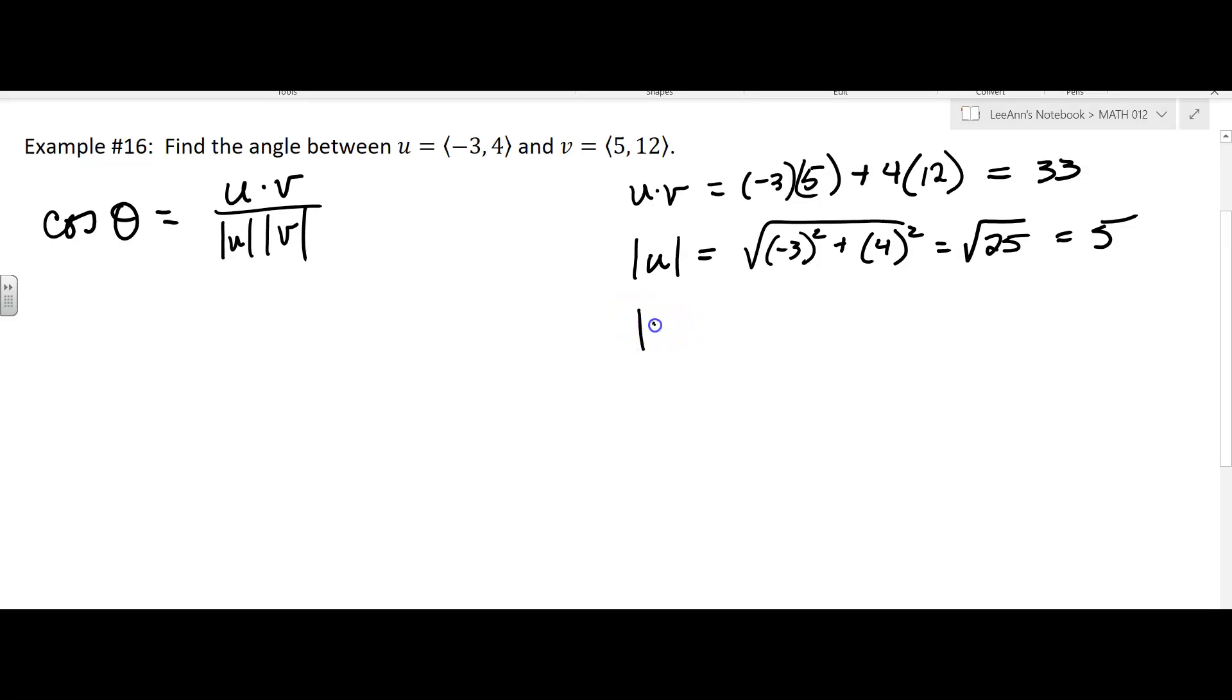Okay, and then we have to find the magnitude of v, which is going to be 5 squared plus 12 squared. I think we did this one too, which is 25 plus 144, that's 169. So square root of 169 is 13.